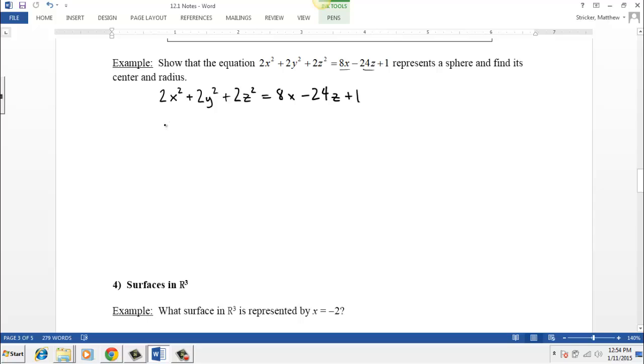And I'm going to go ahead and write the x's and the z's together. So when I do this, this looks like 2x squared minus 8x plus 2y squared plus 2z squared. And now this negative 24z goes over, so that's plus 24z and equals 1.